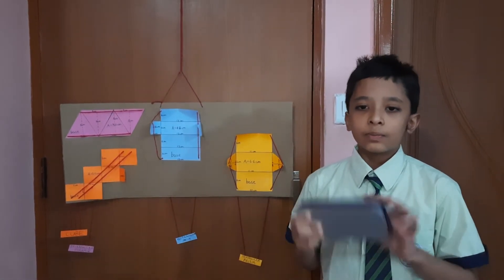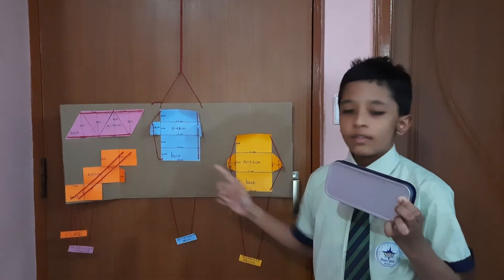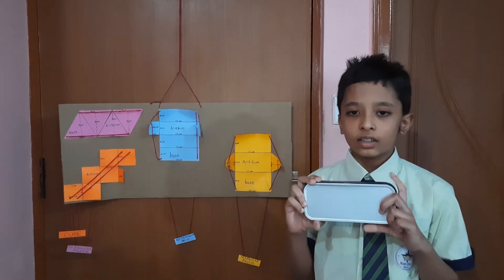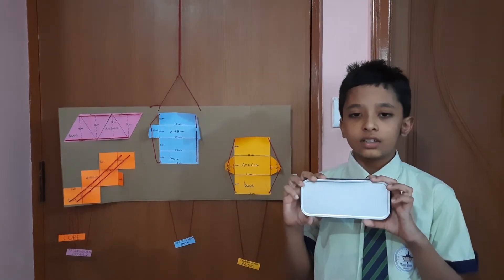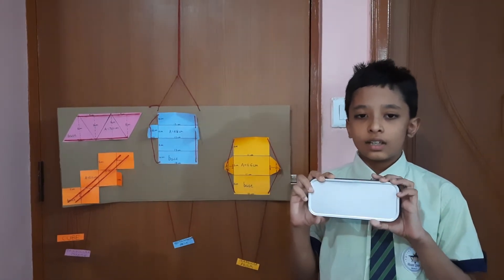For example, if a pencil box is a cuboid where all the faces are rectangles, by adding the areas of all the 6 rectangular faces, we will get the total surface area of a cuboid.